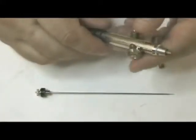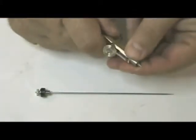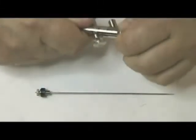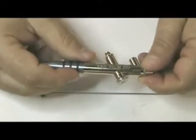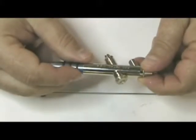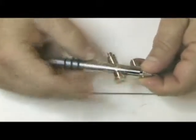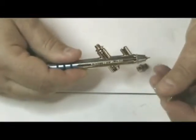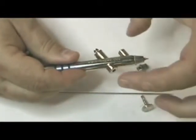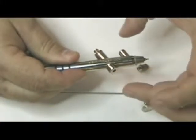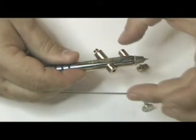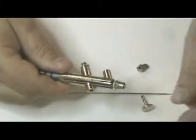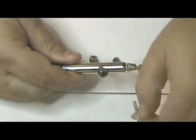Oh, and by the way, this is what is called a single action brush. In other words, the only thing that this button controls here is the amount of air that goes through it. The amount of paint is a constant amount. With a dual action brush, you can control the air and you can control how much paint comes out through the nozzle. So this is a single action brush.